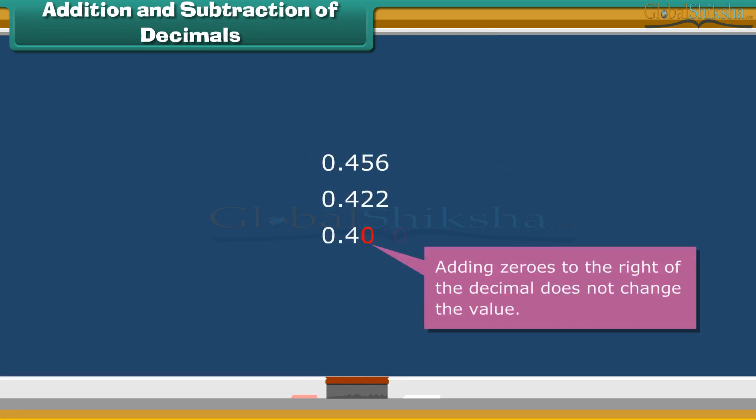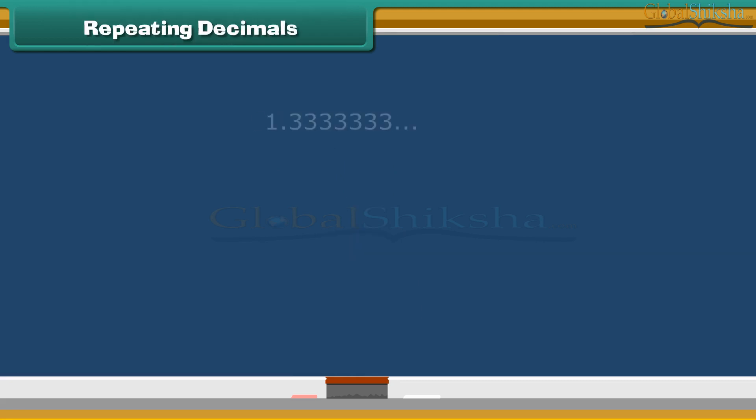Remember, adding zeros to the right of the decimal does not change the value. Some decimals don't stop and go on adding numbers to the right forever. Look at the decimal numbers of the fraction 1 by 3. What did you notice? It starts with 0.33333 and just keeps going on and on. So these decimals are termed as repeating decimals.